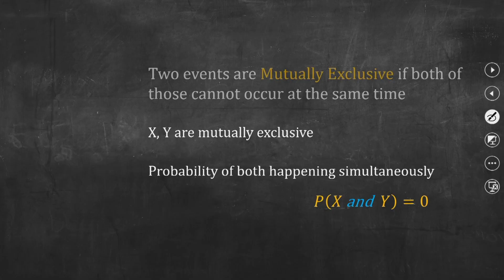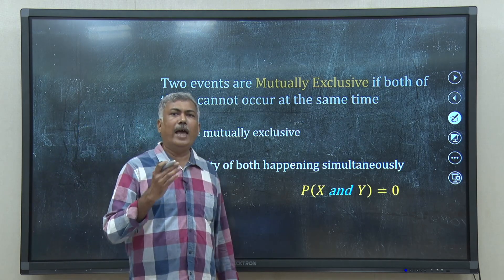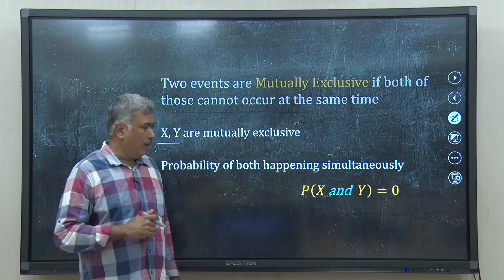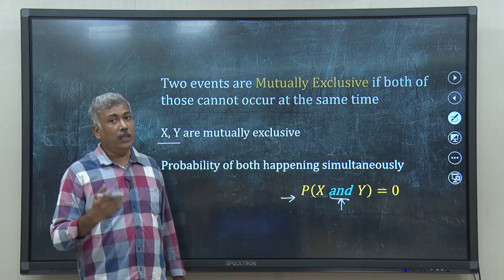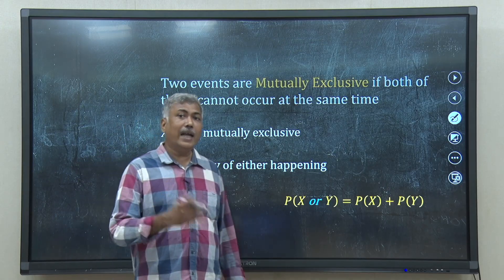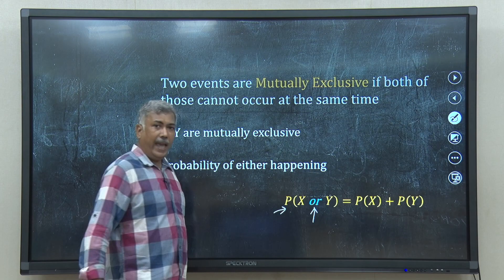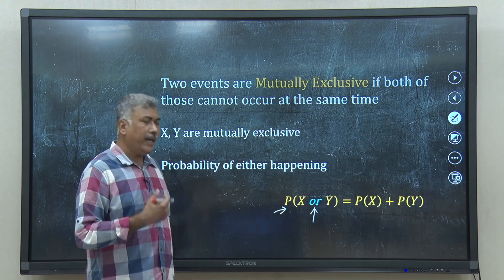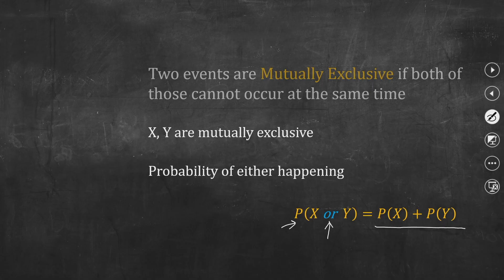If I have 2 events x and y that are mutually exclusive, then the probability that both happen simultaneously is 0, represented as P(x and y) = 0. If x and y are mutually exclusive and I ask what is the probability that either x or y happens, then P(x or y) = P(x) + P(y). This is the addition rule for mutually exclusive events.